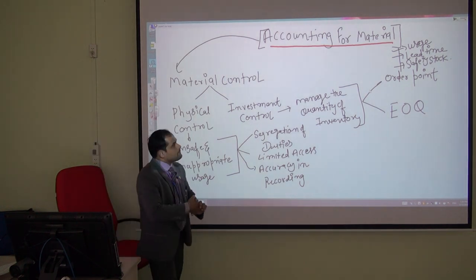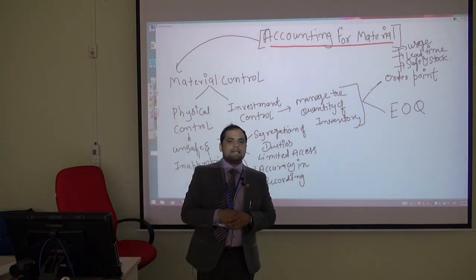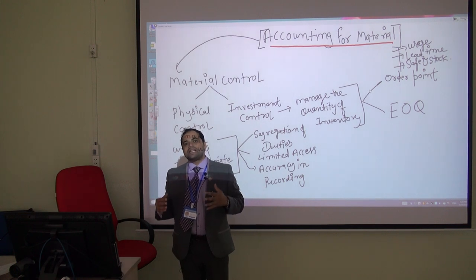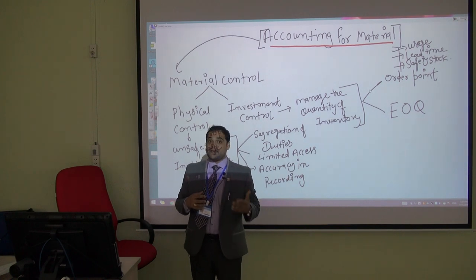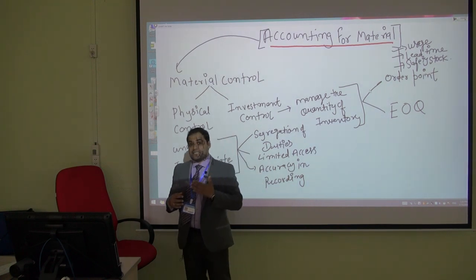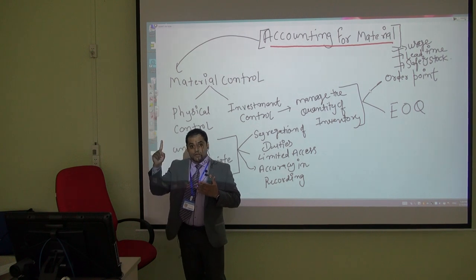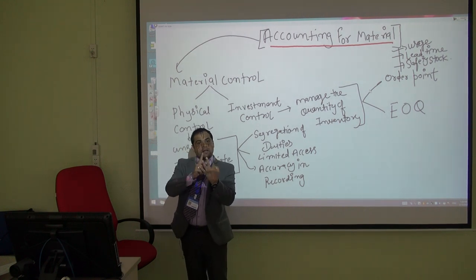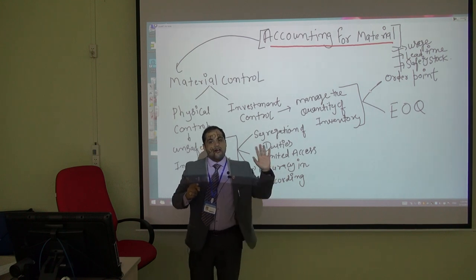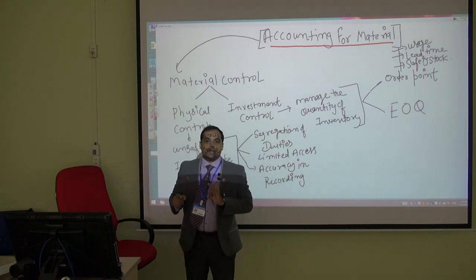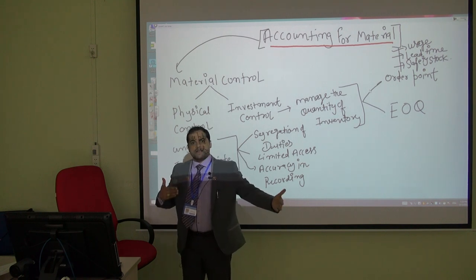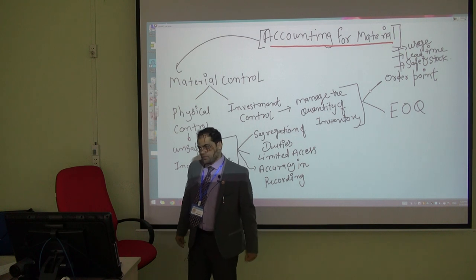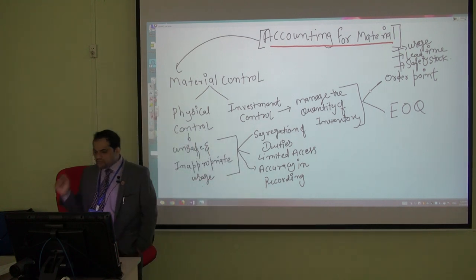The next concept is lead time — how long the supplier takes to deliver raw material to your factory. In my example, the supplier takes three days, and my daily consumption is one kilogram, so one kilogram multiplied by three means I should have at least three kilograms in my store department. Lead time could be three days, one week, or one month depending on how far your supplier is.